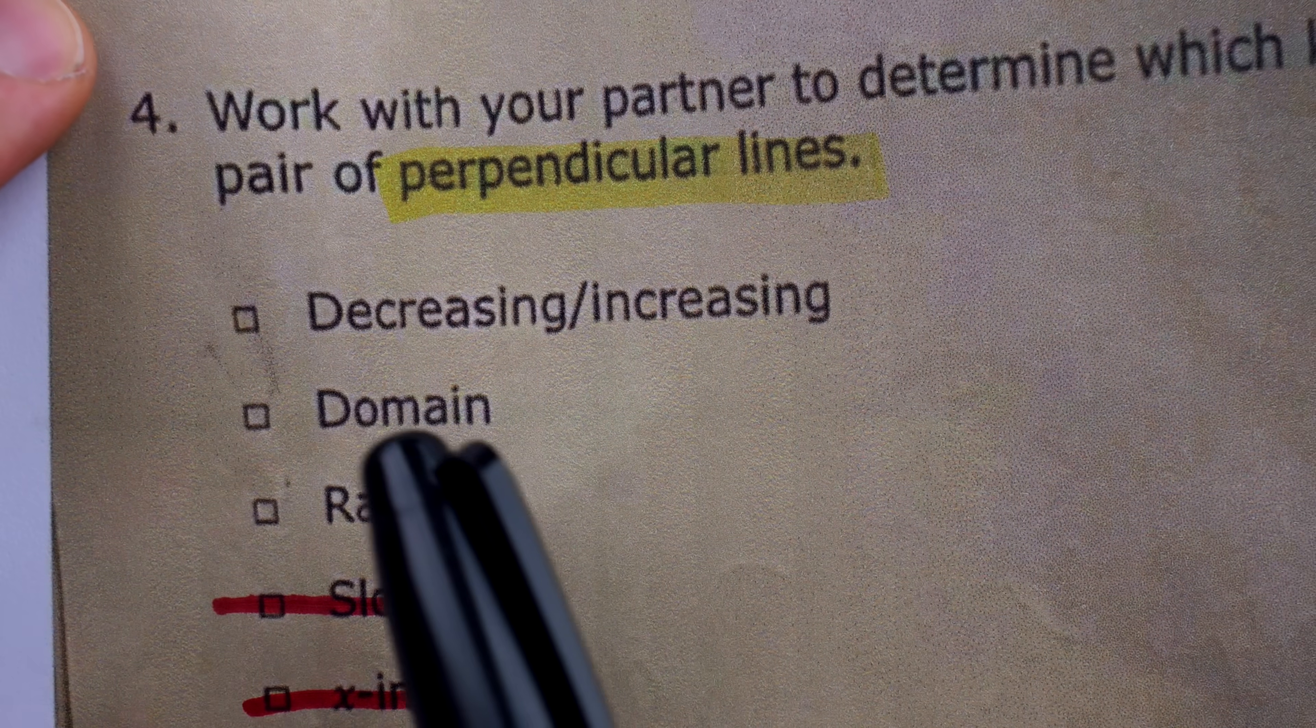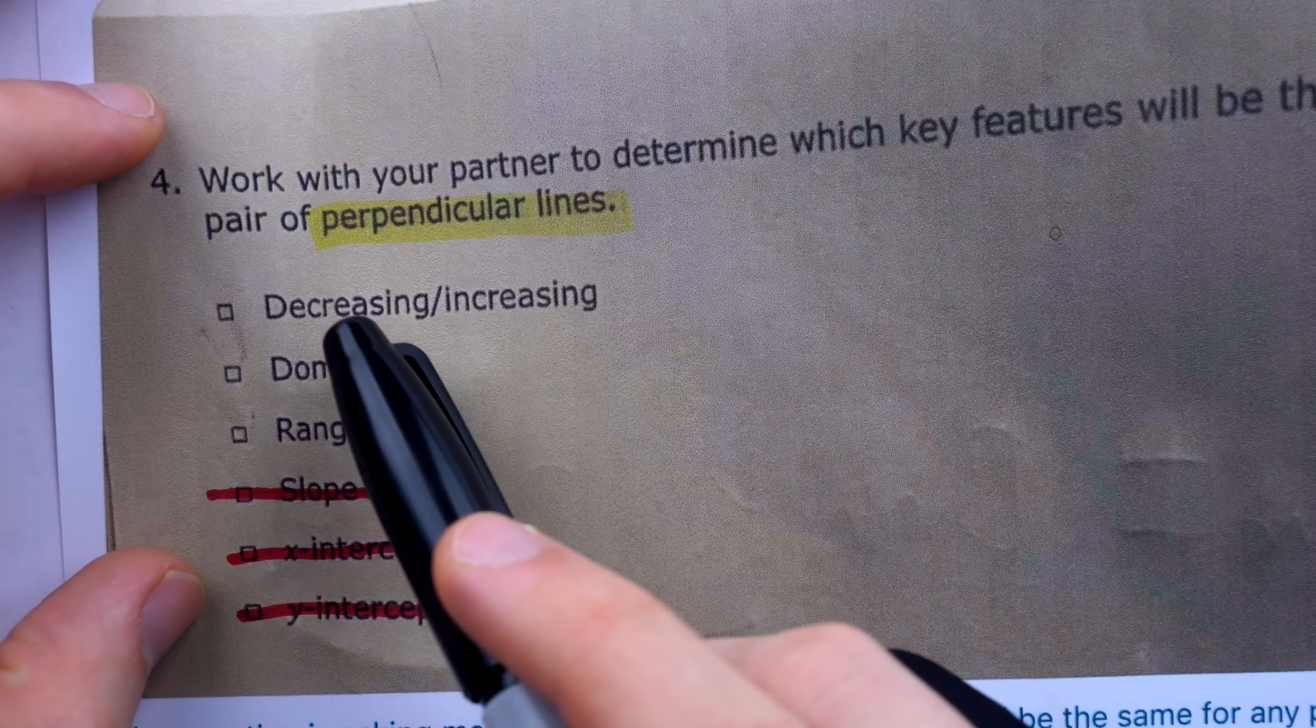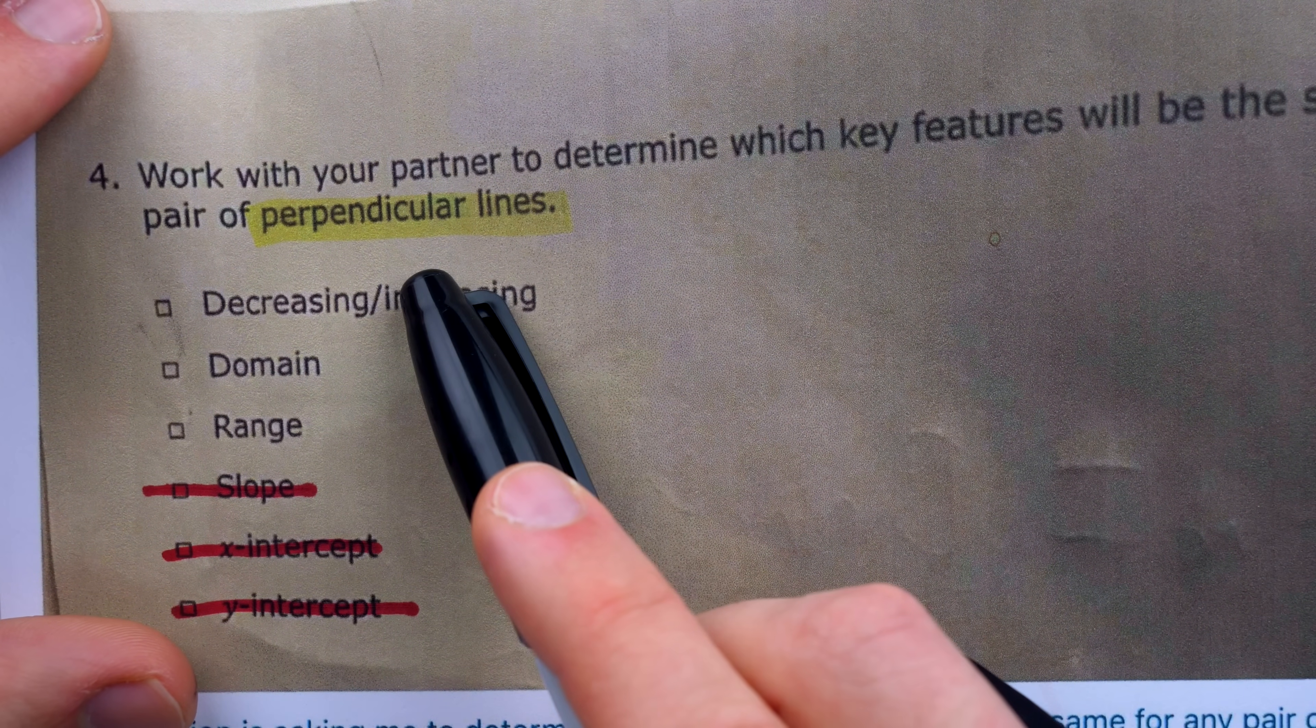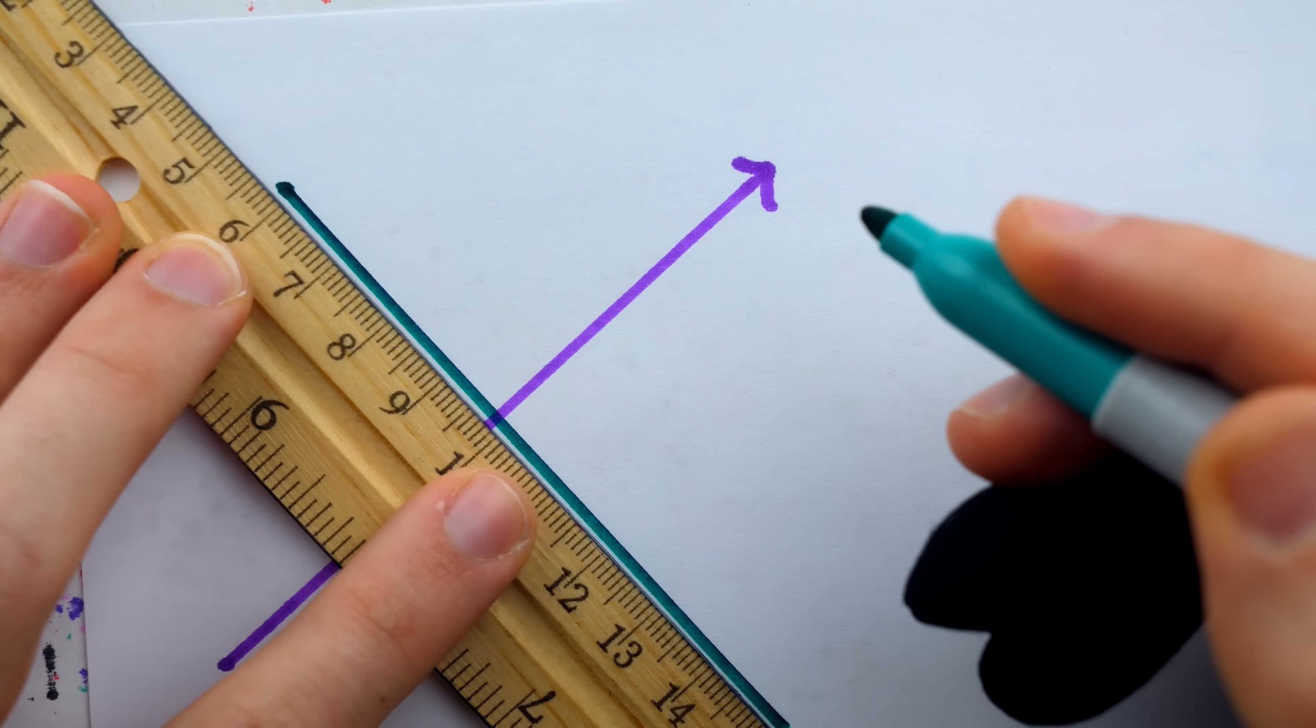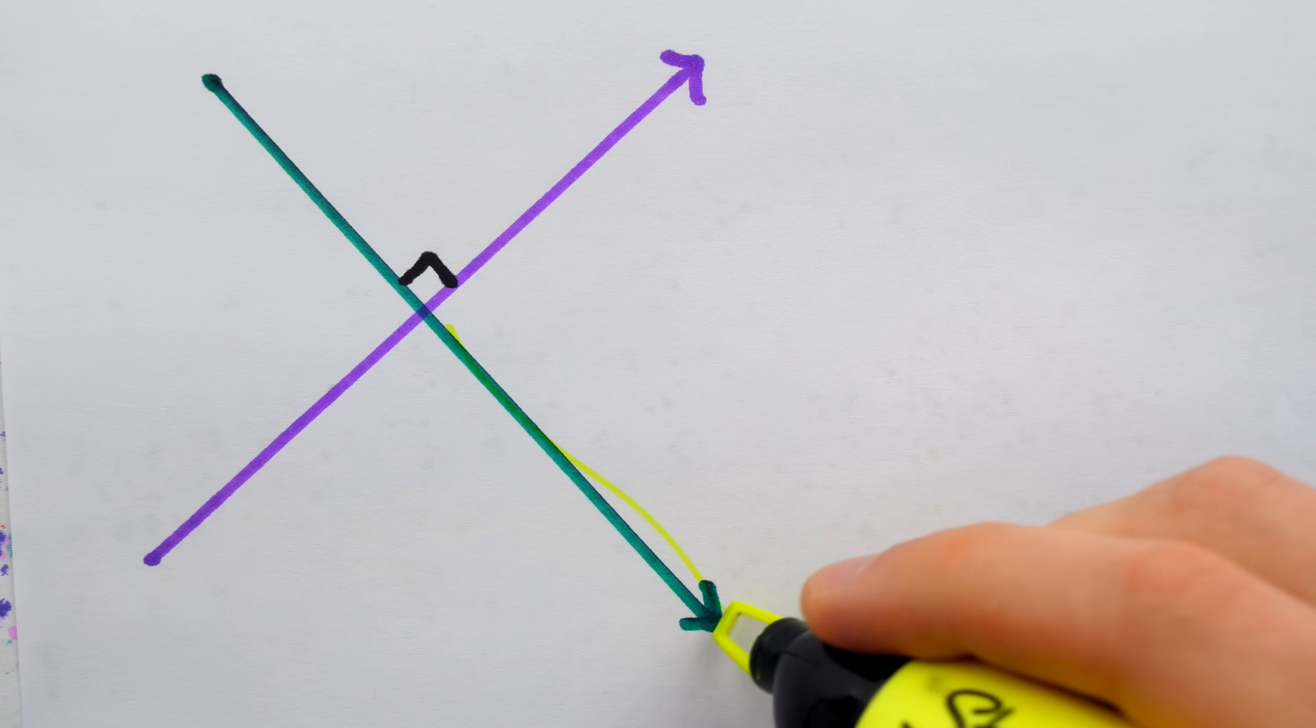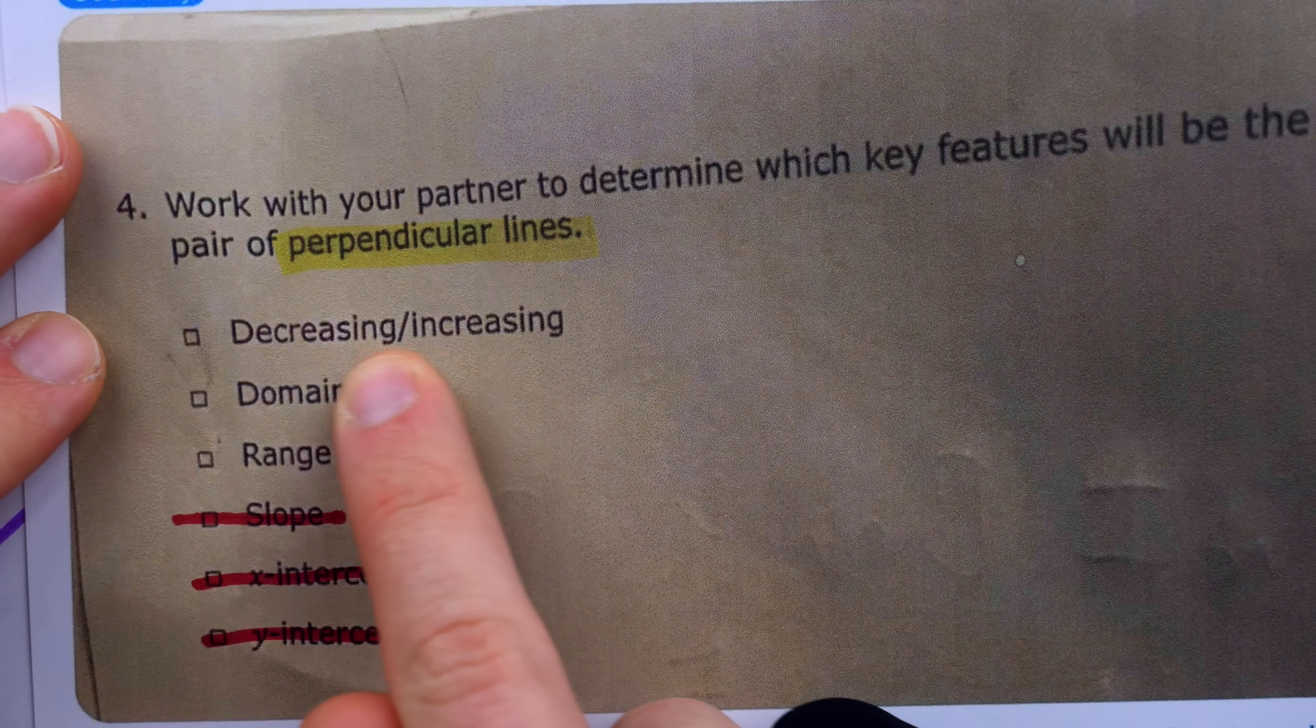Let's go back up top to decreasing slash increasing. Will two perpendicular lines always be decreasing? Will two perpendicular lines always be increasing? No. Quite the opposite. If one line is going up, its perpendicular friend has got to be going down. And of course, vice versa. If one's going down, the perpendicular friend has got to be going up.